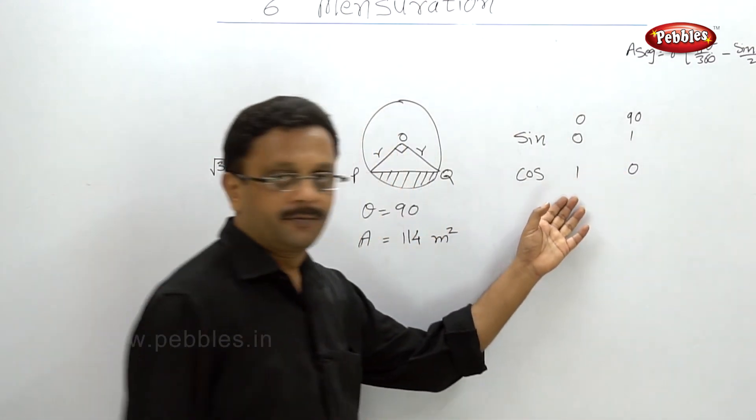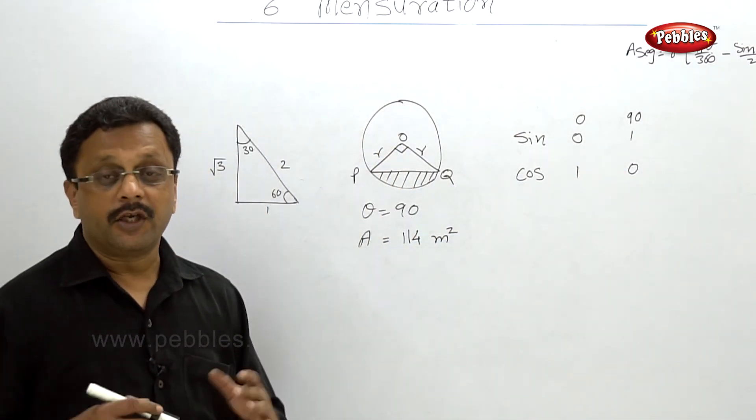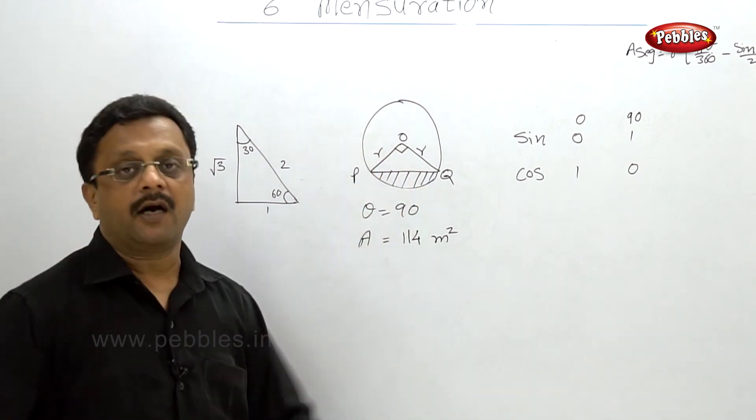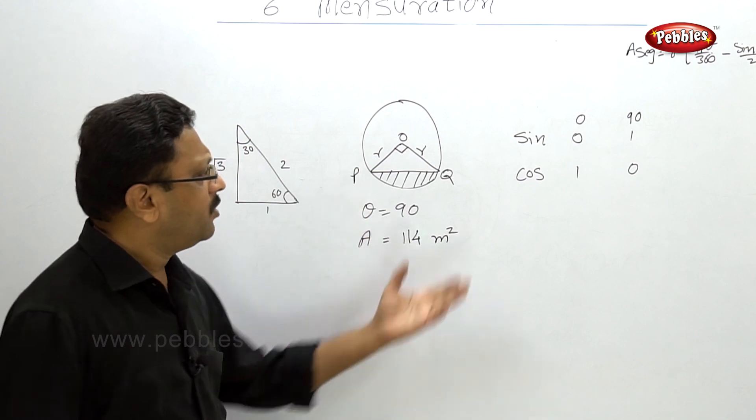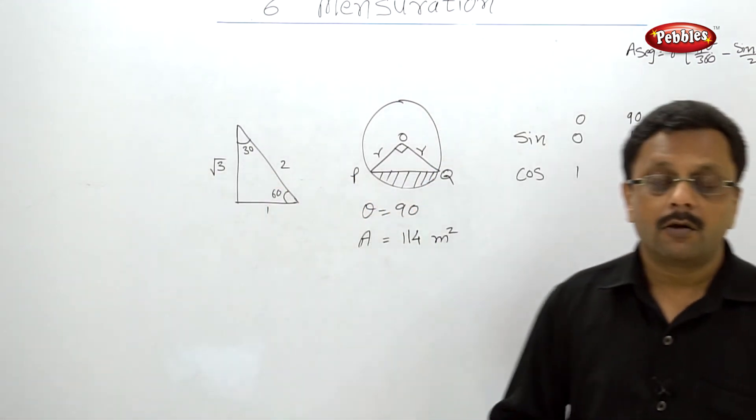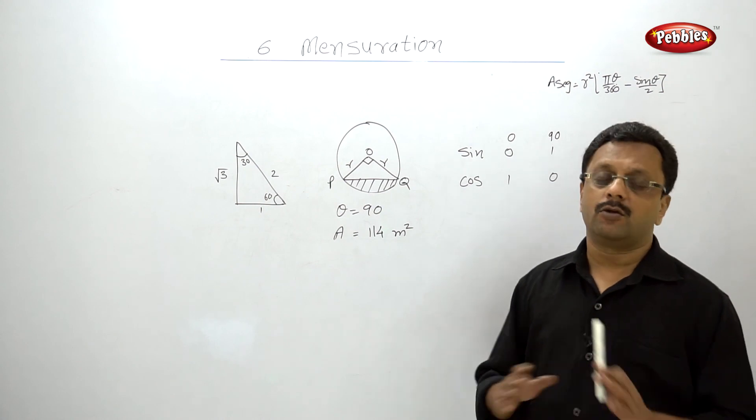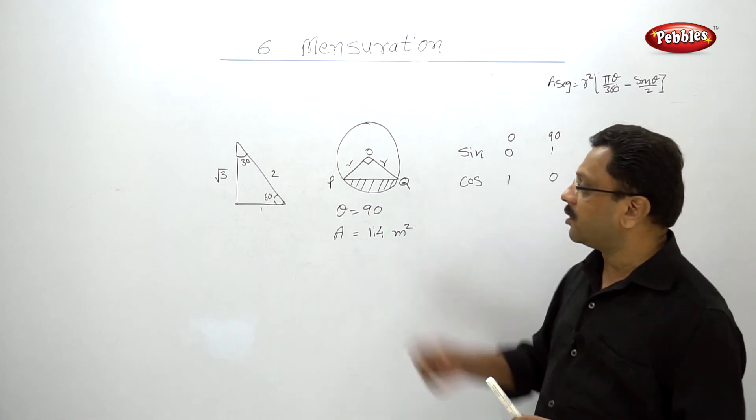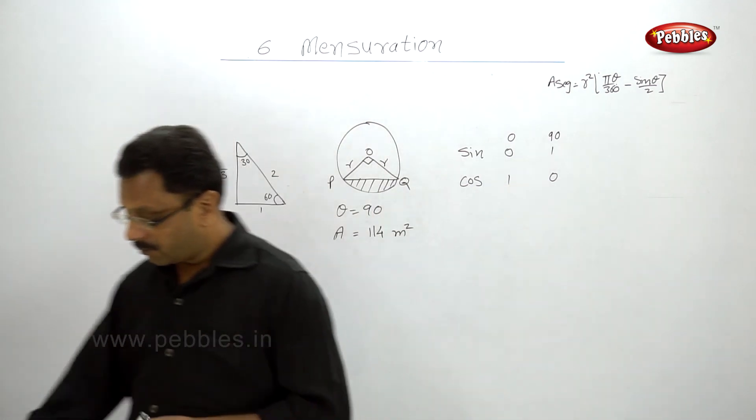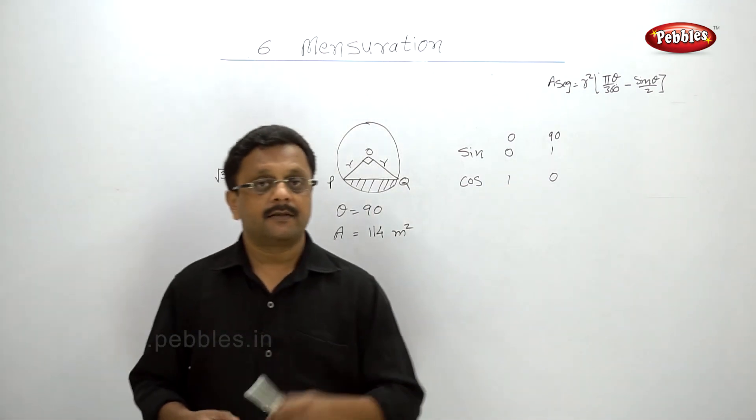So now it is very easy, it is a direct substitution of formula in which only R is unknown. So please solve this, pause your video, solve this and after that we will move to exercise 6.2.